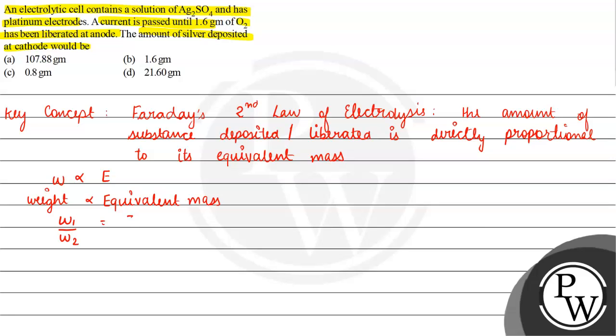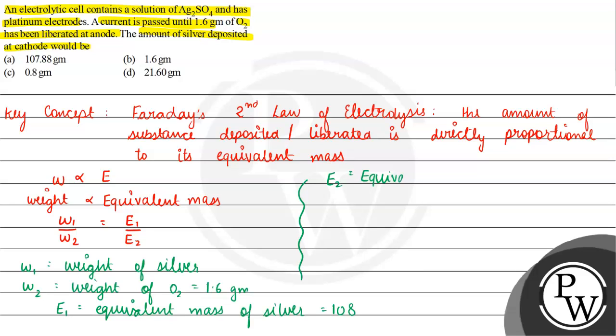So for example, if we go to this question, W1 is the weight of silver. E1 is the equivalent mass of silver, so that is 108. And E2, so E2 is the equivalent mass of oxygen, so oxygen's equivalent mass is equal to 8.